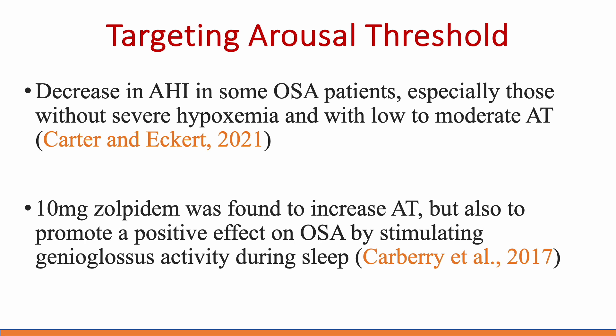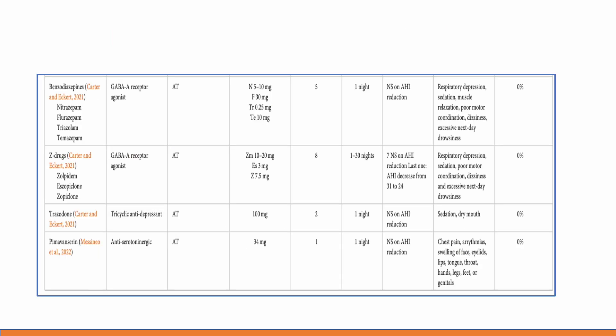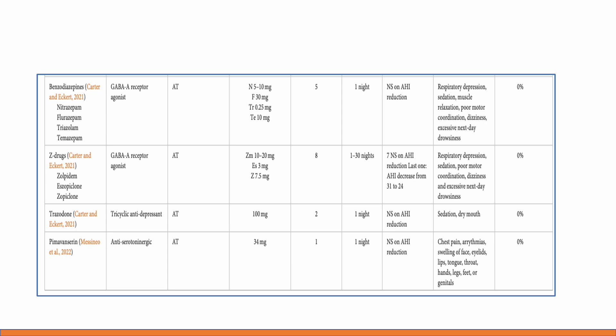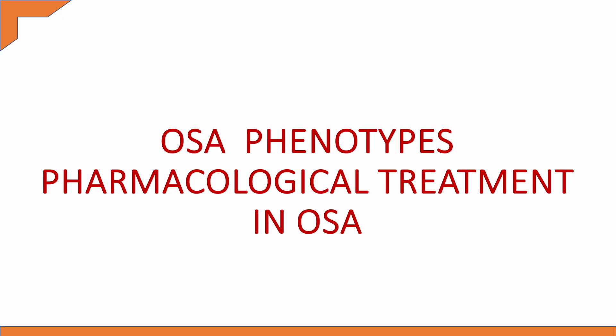Classically, benzodiazepines and Z-drugs have been used for arousal threshold targeting. 10 mg of zolpidem has been found to increase the arousal threshold and promote positive effects on genioglossal activity. Trazodone and pimavanserin are two other drugs in this category. Benzodiazepines, as GABA-A receptor agonists, affect the arousal threshold, with partial but not statistically significant AHI reduction. Most benzodiazepine studies are single-night studies; Z-drug studies extend to about four weeks, which is still limited. They remain a viable alternative when arousal threshold is the primary concern.